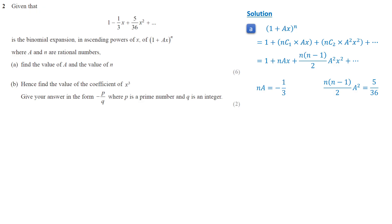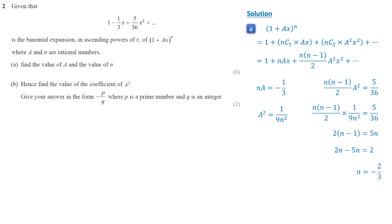From the first comparison, we know that n times a equals negative 1 over 3. Thus, a squared equals 1 over 9n squared. Substituting this into the equation for the coefficient of x squared, we get n(n−1)/2 times 1/(9n squared) equals 5 over 36. Simplifying this equation, we find that n equals negative 2 over 3.